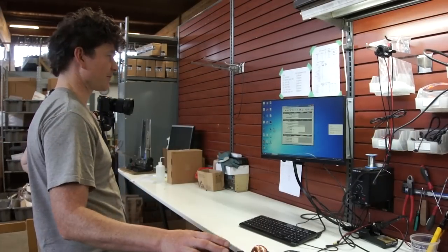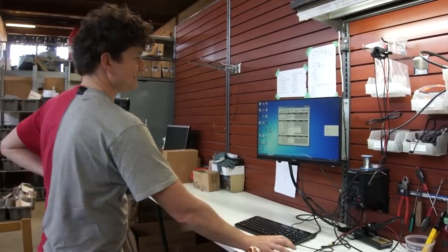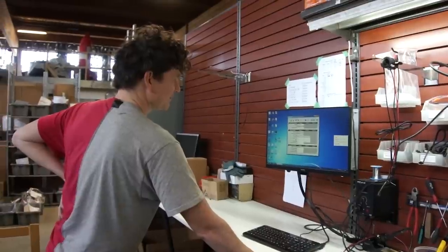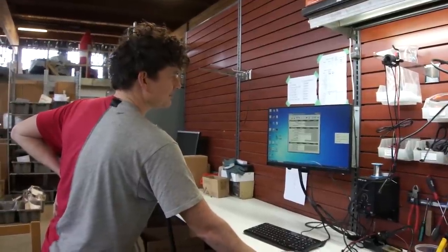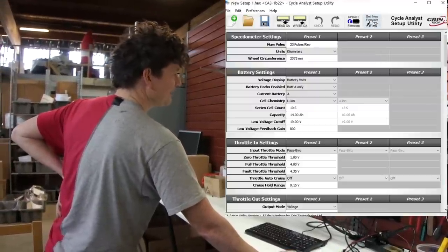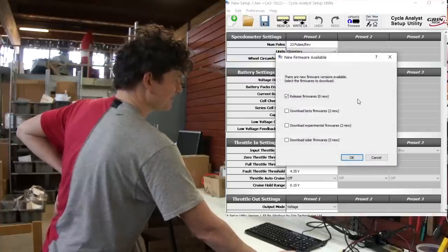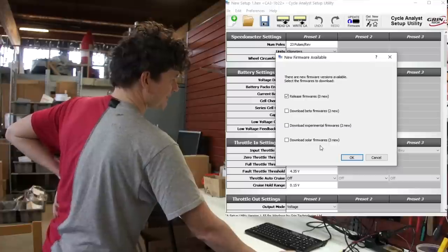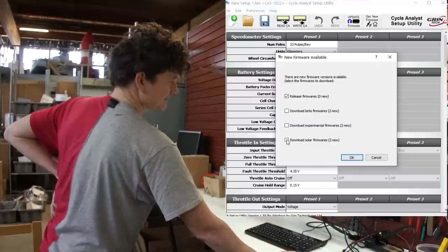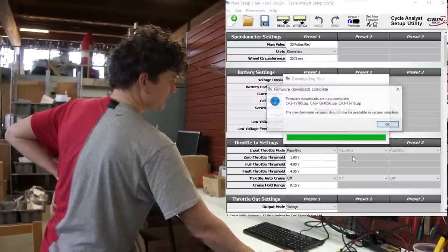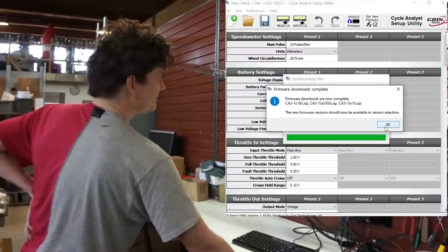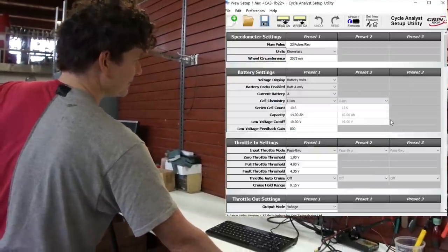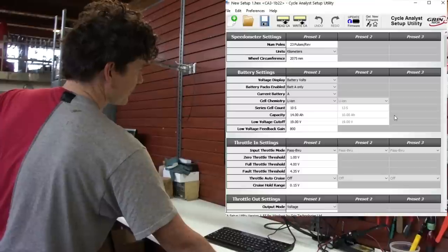In order to get the special solar firmware on this cycle analyst we first have to download it from the Grin server. So in this setup utility software there's a button get new firmware. If you click this button you'll be presented with options for release firmware, beta firmware, alpha firmware and a check box at the very bottom to download the latest solar firmwares. So by checking this check box and clicking OK the software is now going to get and install the solar version of the firmware.